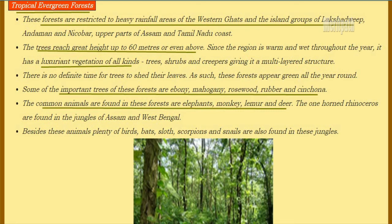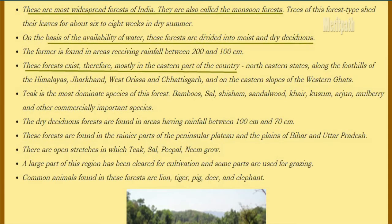Common animals found in tropical evergreen forests are elephants, monkey, lemur and deer. One-horned rhinoceros are also found in the jungles of Assam and West Bengal. Birds, bats, sloths, scorpions and snails are also found in these jungles. In this image we can see the tropical evergreen forest.